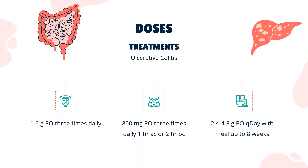Dose — Ulcerative Colitis, Remission Induction of Active Mild to Moderate Disease: Asacol HD 1.6g PO 3x daily; Delzicol 800mg PO 3x daily, 1 hour before or 2 hours after meals; Lialda 2.4–4.8g PO once daily with meal for up to 8 weeks; Pentasa 1g PO 4x daily for 8 weeks.